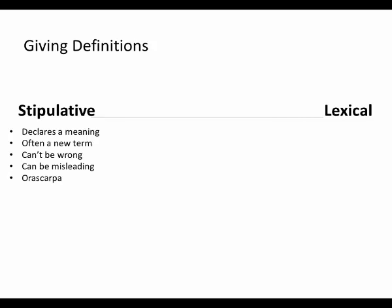On the other hand, a stipulative definition could be misleading, especially if somebody declares a new meaning for a word that already means something else. If I say, 'I want you to come over and I'm going to make some chicken,' and then you come over and I say, 'Oh, I forgot to tell you — I use the word chicken in a different way. When I say chicken, I always mean human flesh.' Technically, is that an incorrect use of the word? I mean, I can stipulate that I use this word in a different way. It's kind of strange because it seems to be defeating the point of language, but technically it's not incorrect. It's misleading, though.